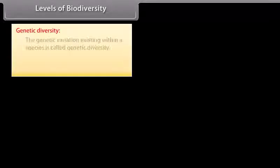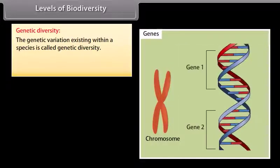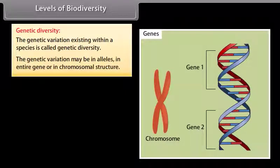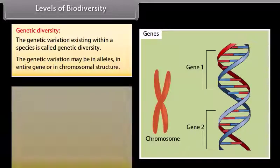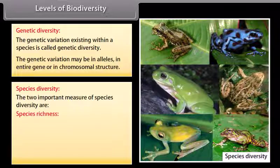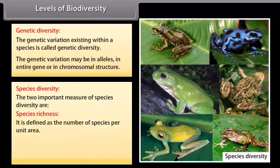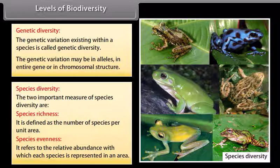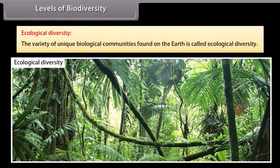Levels of biodiversity. Genetic variation may be in alleles, in entire genes, or in chromosomal structure. Species diversity has two important measures: species richness, defined as the number of species per unit area, and species evenness, which refers to the relative abundance with which each species is represented in an area. Ecological diversity refers to the variety of unique biological communities found on the earth.